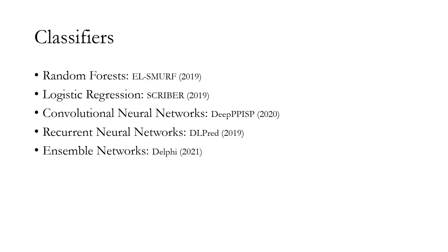Protein interaction problems are usually considered to be a classification problem. In computer science, classifiers usually have two phases. The training phase is used to train the model on available data, and the testing phase is to classify the new input. LSMORPH is a method presented in 2019, which utilizes the random forest classifier to predict the binding sites. Scriber, which is also introduced in 2019, uses two levels of logistic regression on top of an input of size 1000.